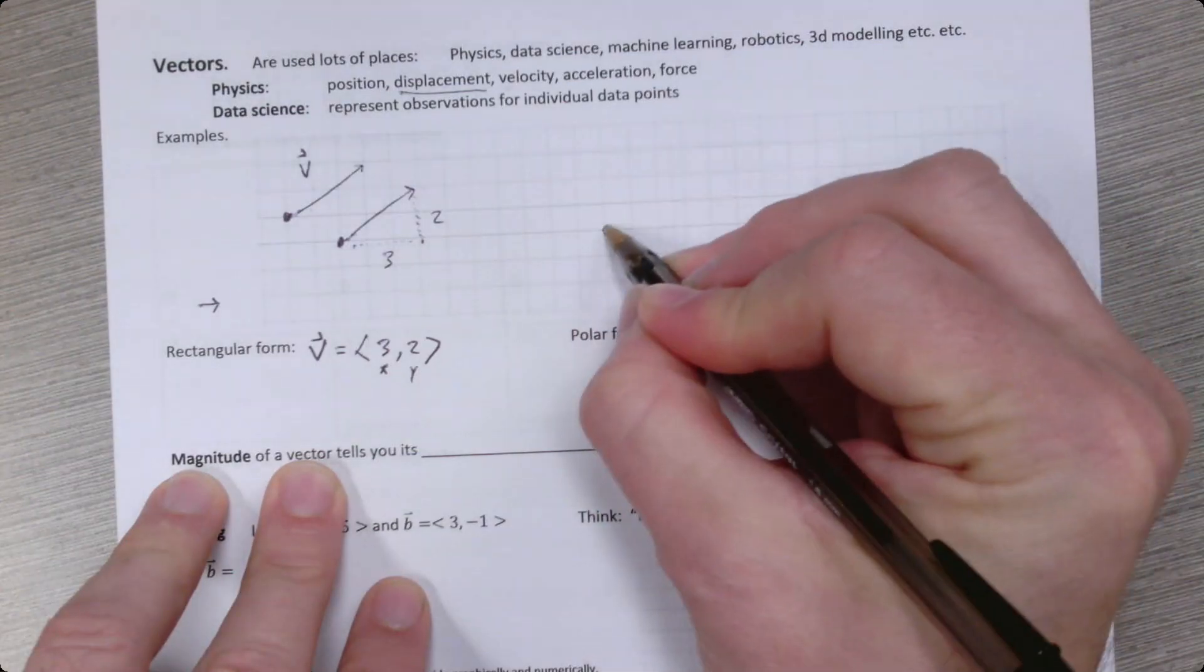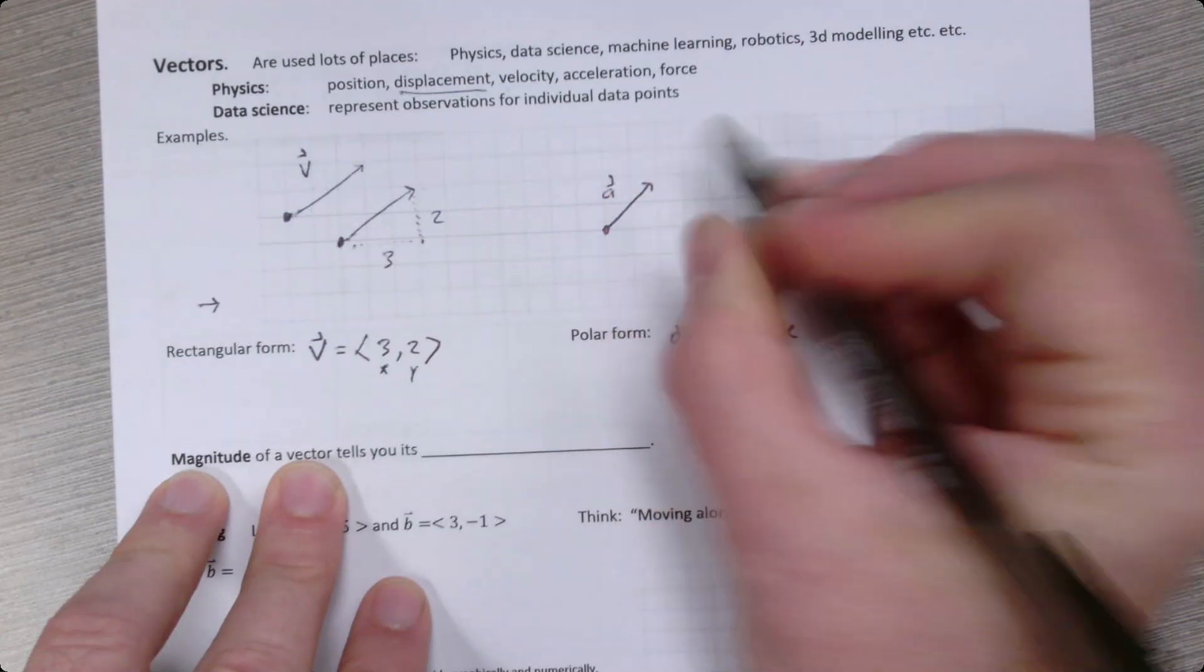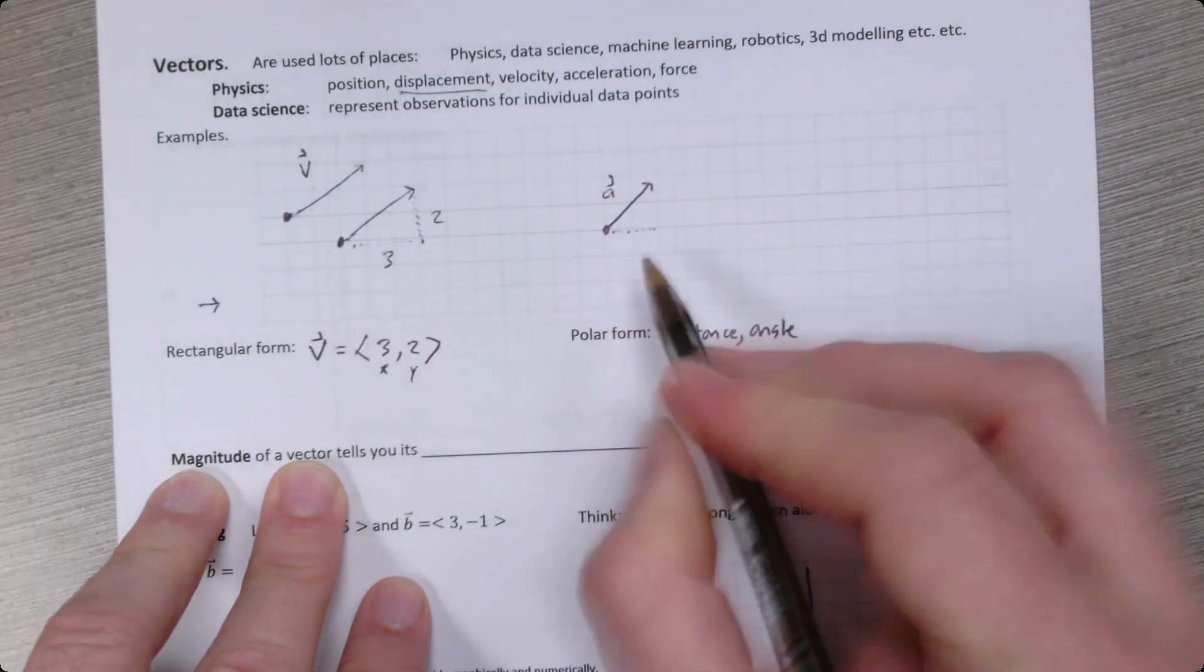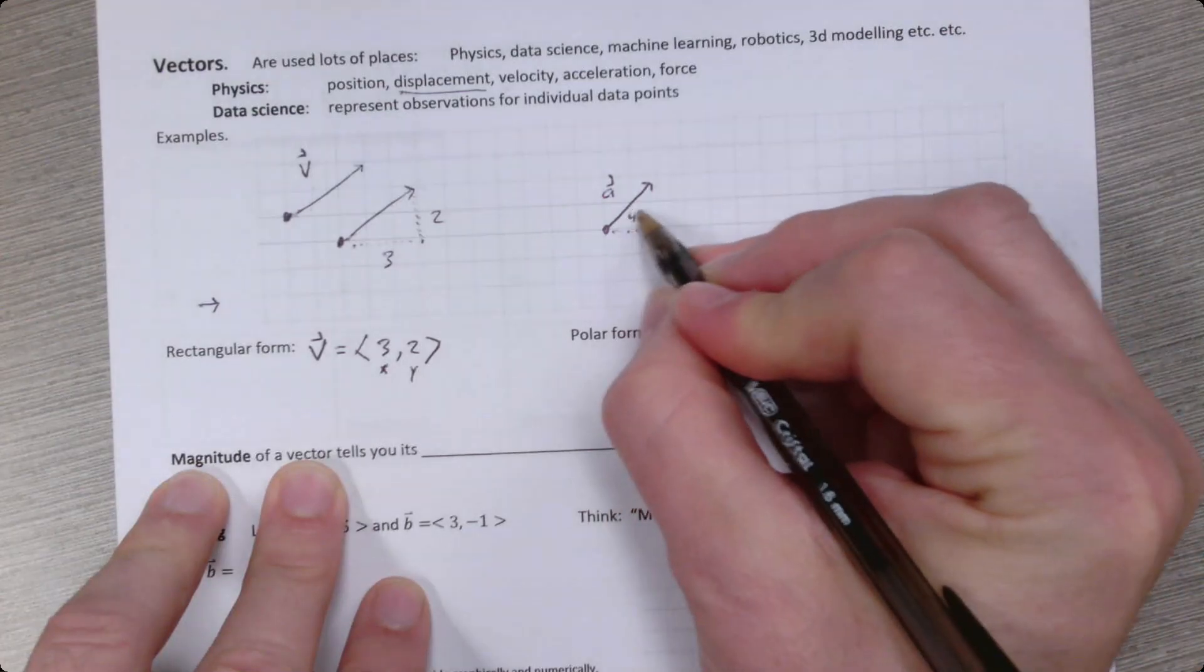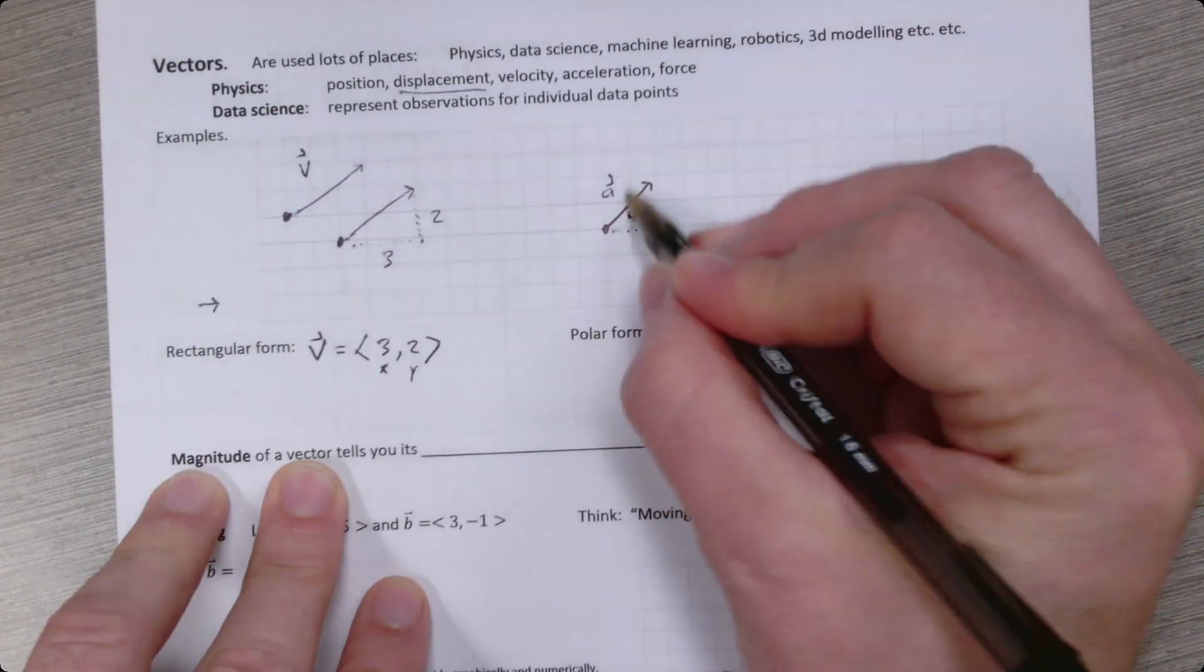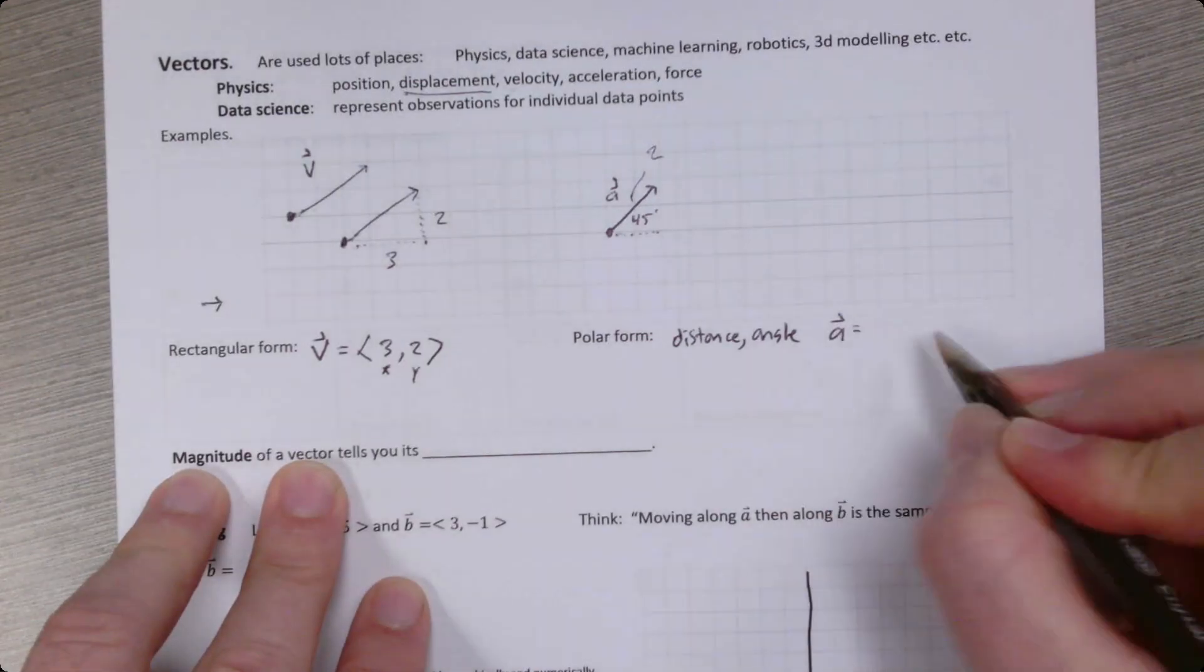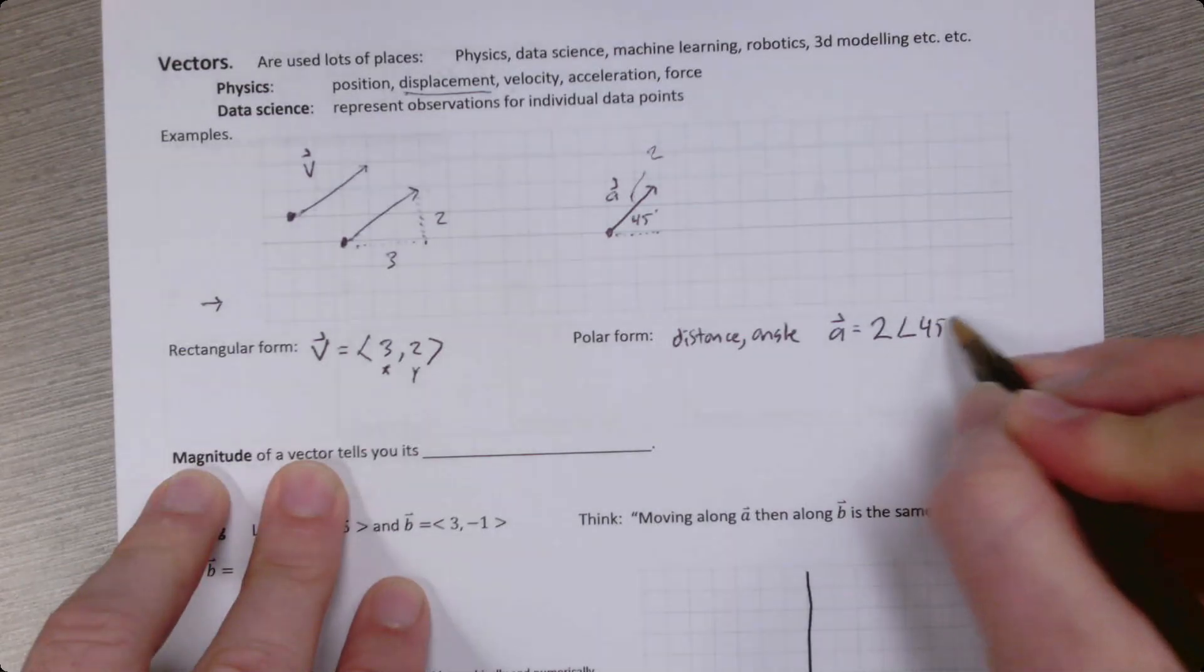So for example, I could have, let's call this vector a. The angle, which is always measured relative to the horizontal here, is 45 degrees. And let's say that the distance is a distance of two. How would I notate that? I would say a equals distance two, and the little angle symbol, and then 45 degrees.